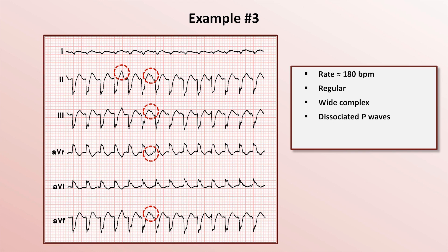The same can be said of the T-waves in leads 3 and AVF, and the T-wave in AVR is just a little bit deeper than the others. The reason is another dissociated P-wave that happens to strike at the exact peak of the T-wave.